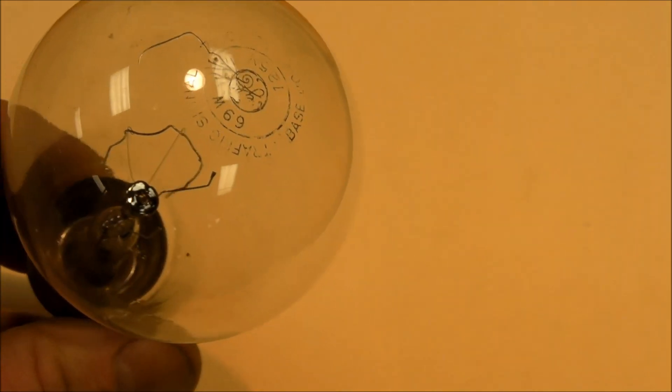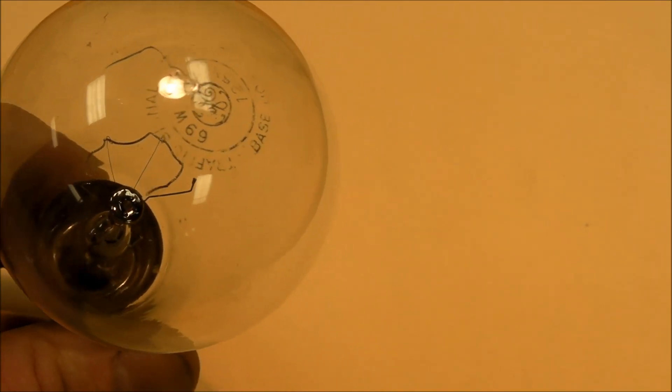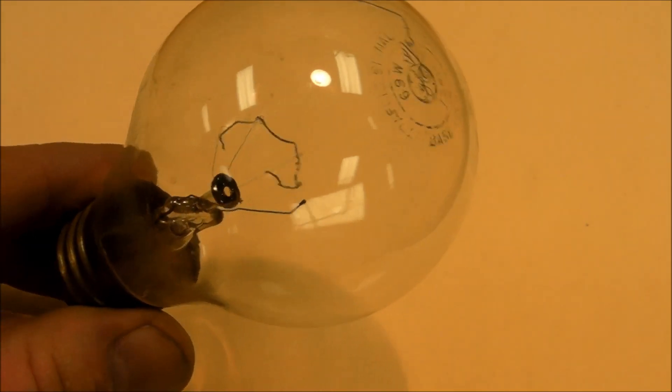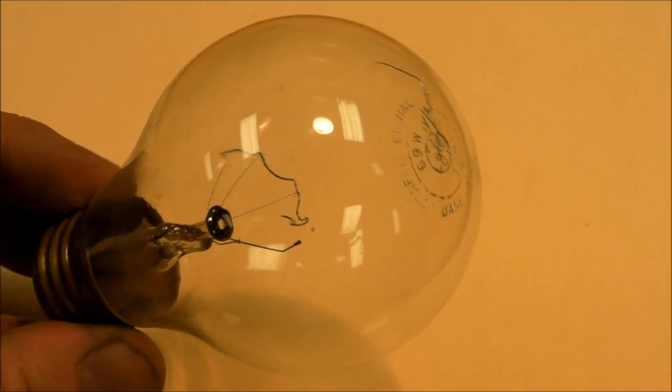The glass is even molten a little bit right next to the E in the GE symbol. And the filament was already busted before I put it on the Tesla coil.